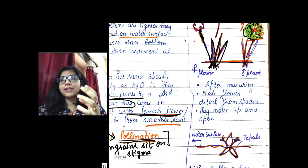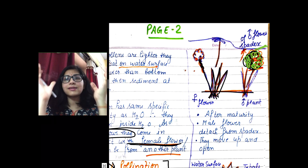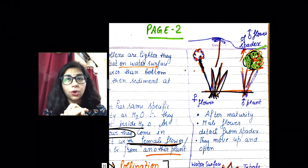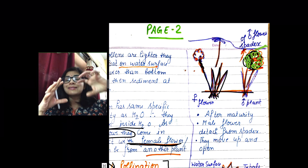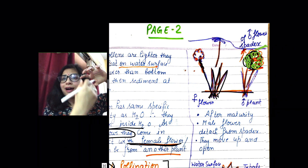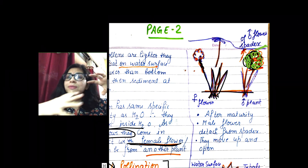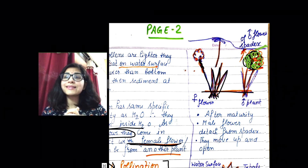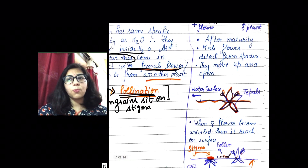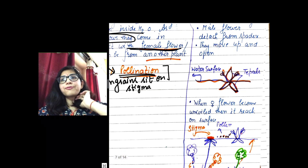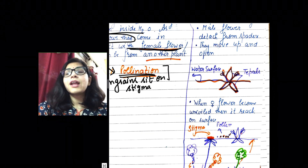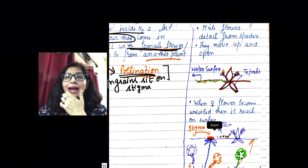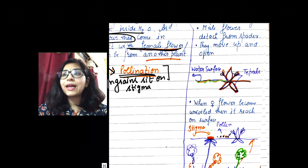After maturity, as long as they are growing, the male flowers remain in the spadix. Once they get matured, they start detaching from this group — the spadix. They detach, move upward, and reach the surface of the water.